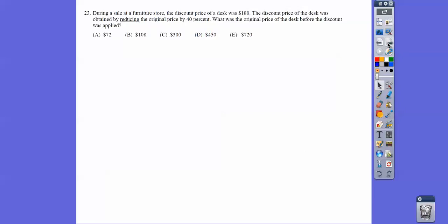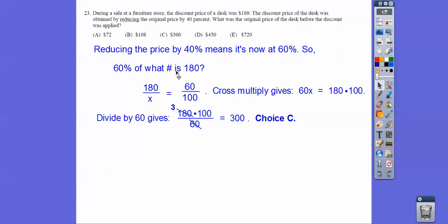Other ways you can do that, but in case you don't remember, just make them smaller. During a sale at a furniture store, the discount price of a desk was $180. The discount price of the desk was obtained by reducing it by 40%, so that means this is 60% of the original. So 60% of what number is 180? Go ahead and do the percent over 100 is over of, and then cross multiply, and so we get choice C on that one.